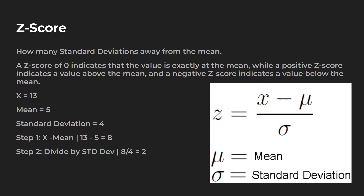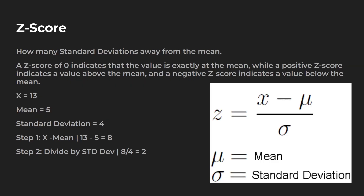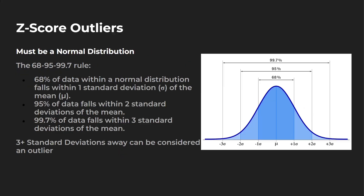Let's take a look at a calculation. For example, your value is 13, the mean is 5, and you have a standard deviation of 4. The first thing you're going to do is take your value and subtract the mean — so 13 minus 5 equals 8. Then divide by the standard deviation, which is 8 divided by 4, which equals 2. This 2 means you're two standard deviations away from the mean — because our standard deviation is 4, the mean is 5, so 5 plus 4 plus 4 equals 13, which is our value.